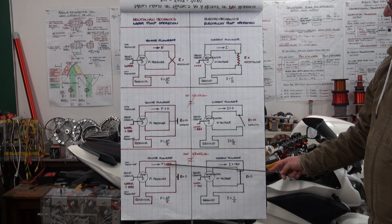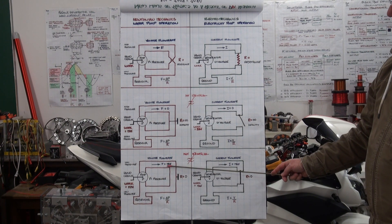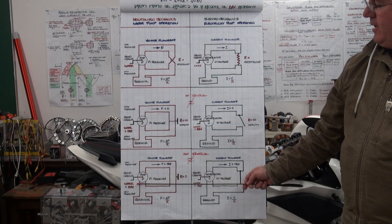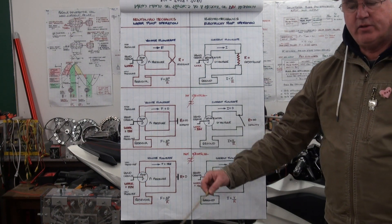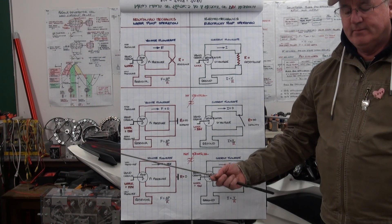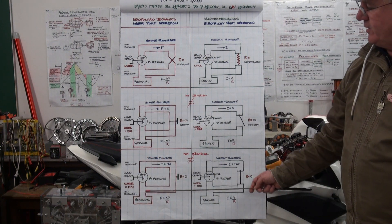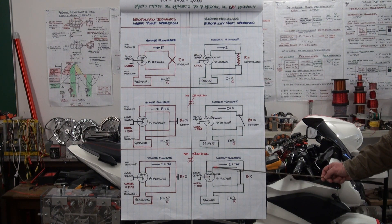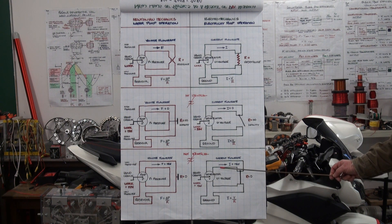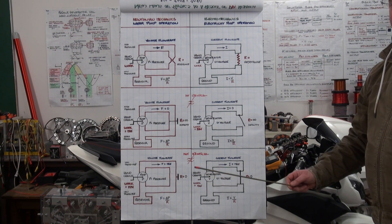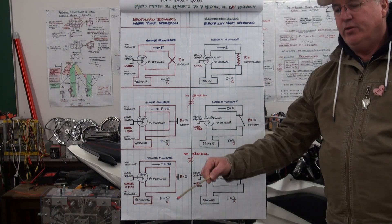In the Newtonian mechanics water pipe version, when the volume flow rate is maximum — when resistance is zero — it is extremely easy to turn the pump because there is very little resistance. However, in the electromechanics version, when resistance is zero and the current flow rate is maximum, that is when it is hardest to turn the generator.